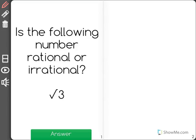Is the following number rational or irrational? Square root of 3. Now rational has a word inside it and that's ratio. So numbers that are rational are numbers that we could write as ratios.